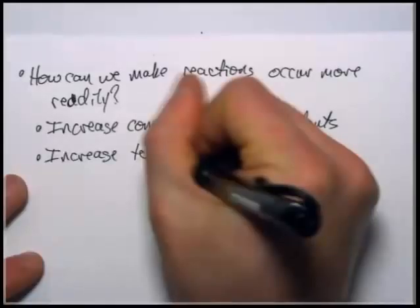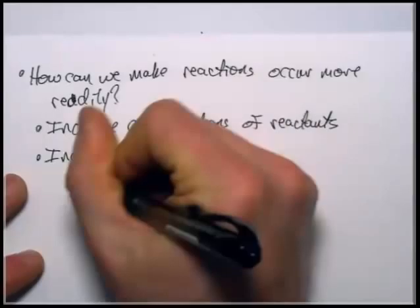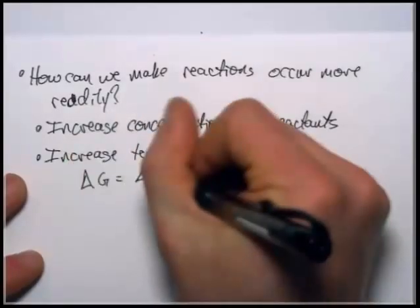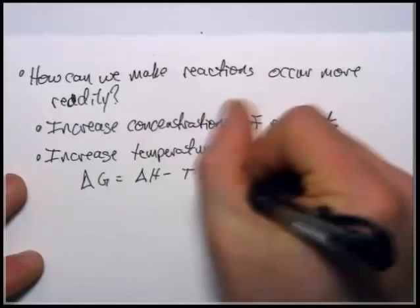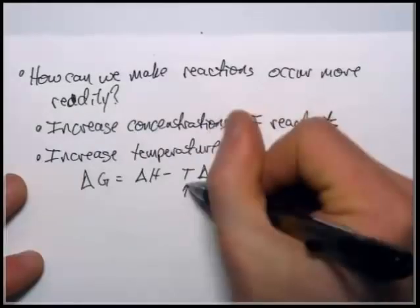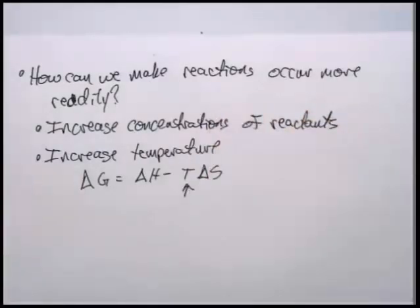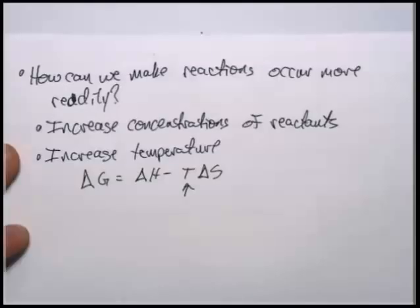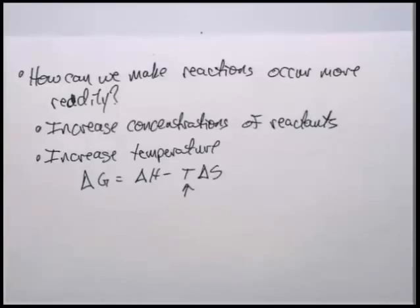Another thing that we can do is increase the temperature. When you increase the temperature, things move quicker. You get more collisions with more energy, which is why we see that temperature is part of our delta G calculation. As temperature increases, it's going to multiply the increase in entropy. If we have more disorder and more reactions happening, we're more likely to have a reaction go where it hits in a precise orientation with the right amount of energy to drive a chemical reaction.